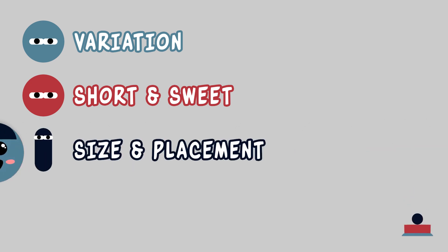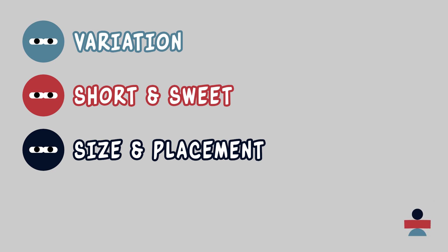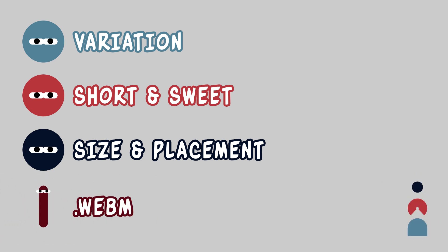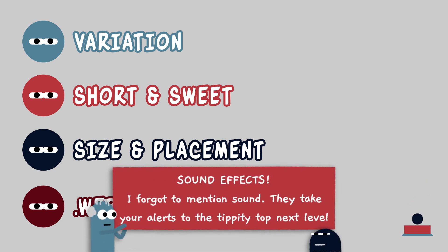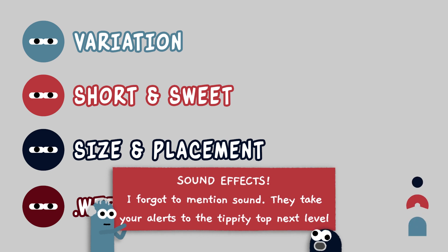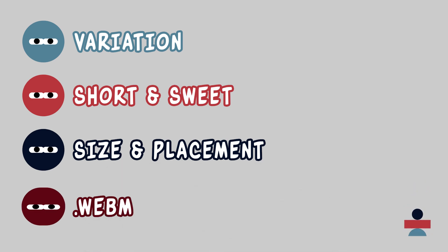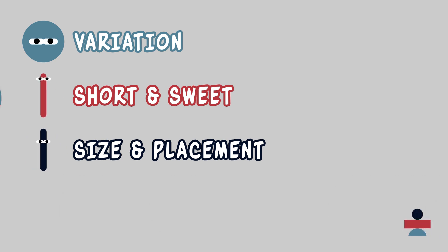Think about size and placement. Is it a full screen alert? Is it just a looping animation meant to play in the top corner? Think about how large it's going to be, where it's going to play, and also where the text should go. The username of the person who subscribed is going to pop up — you have to take that into account. Last: WebM format. Export as a WebM video. It's better than GIF, but it will only work for streaming. If you put a WebM into editing software, it will have a black background, so you'd need to export to a different format — probably a .mov or an MP4 with a green screen background.